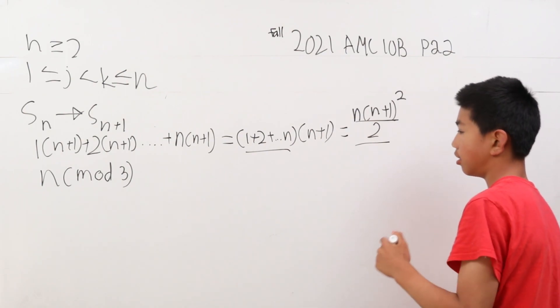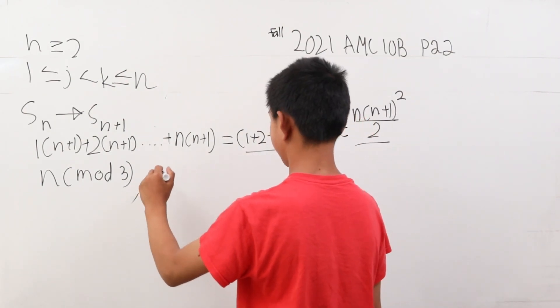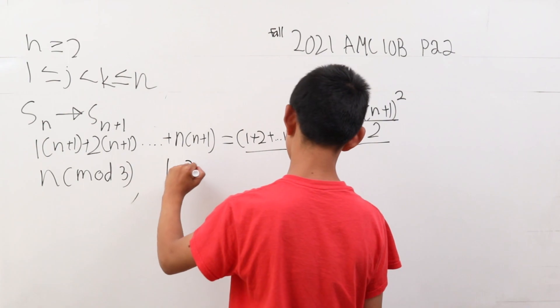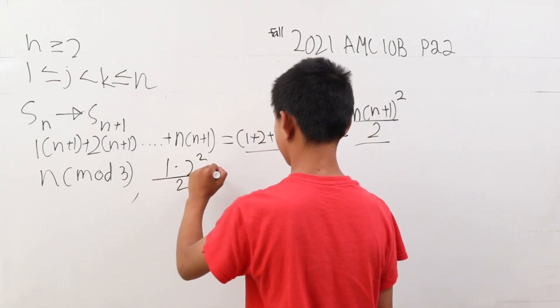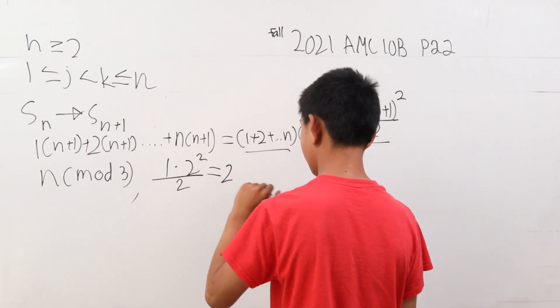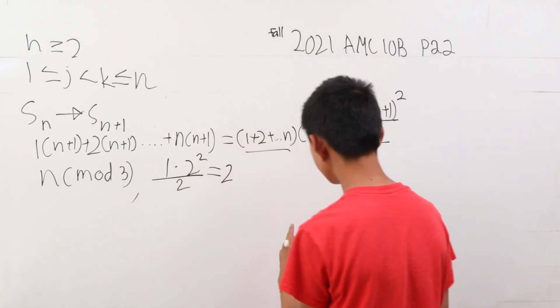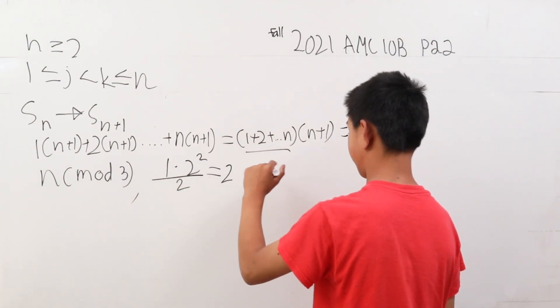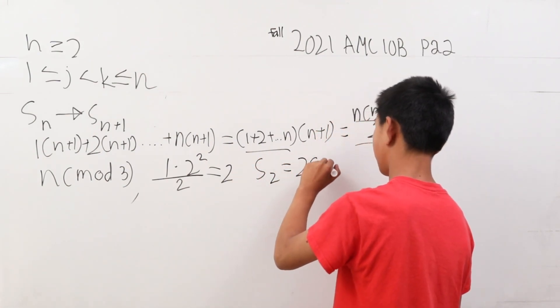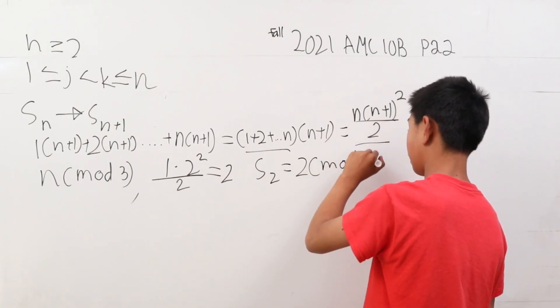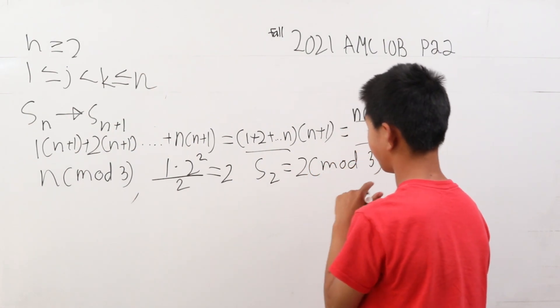When n is 1, 1 times 2 squared over 2 is going to be 2. But now we have to take the mod of that. So s of 2, this is 2 mod 3, therefore it is 2 mod 3.